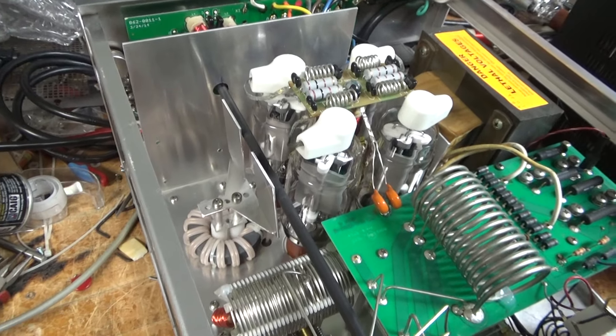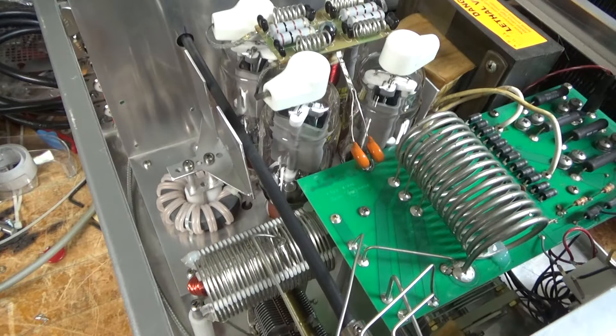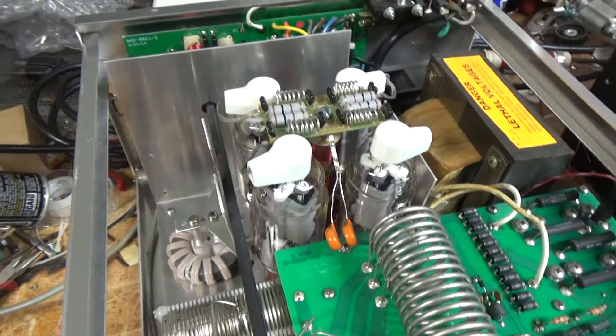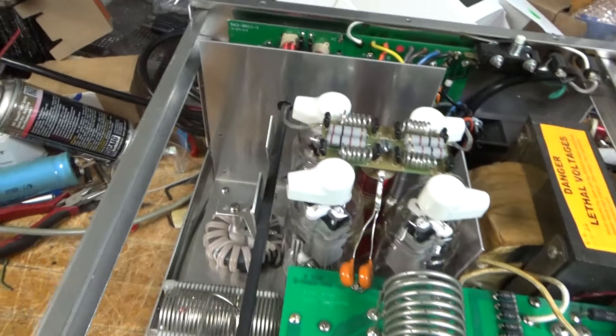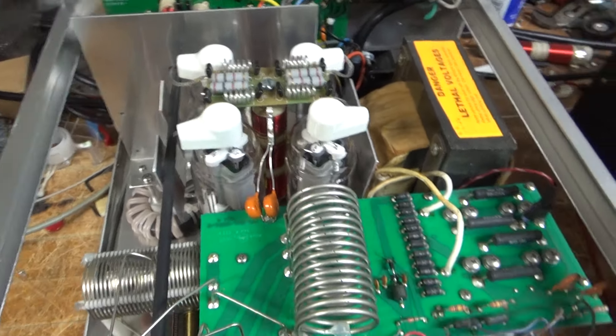Cleaned the rotary switches with Deoxit Gold. Tightened up on hardware. Fixed some solder joints. Put the longer screw in the base of the plate choke. And this thing is ready to rock and roll.